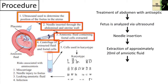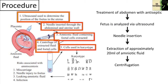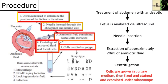The extracted fluid and fetal cells are then centrifuged and used in karyotyping. If used for prenatal genetic diagnosis, fetal cells are separated by centrifugation from the extracted sample. The cells are grown in culture medium, then fixed and stained. Under a microscope, the chromosomes are examined for abnormalities.